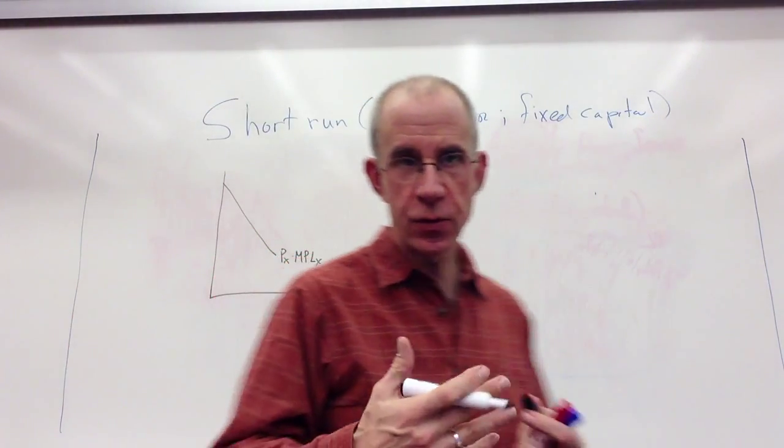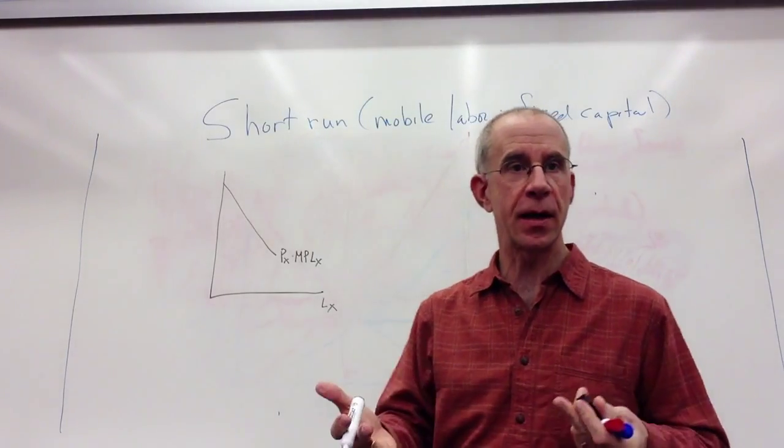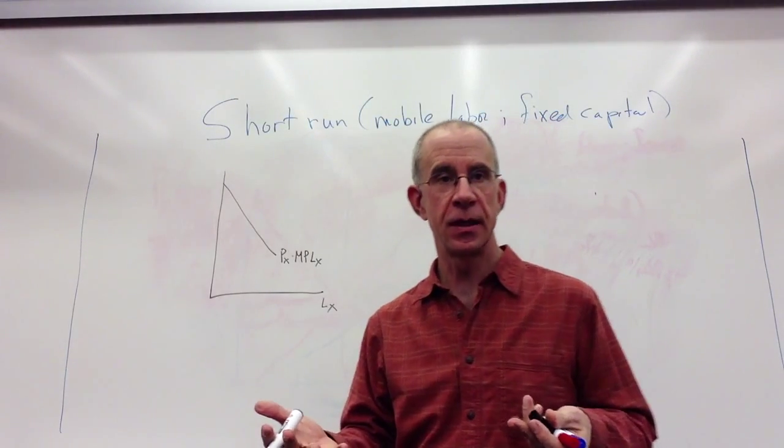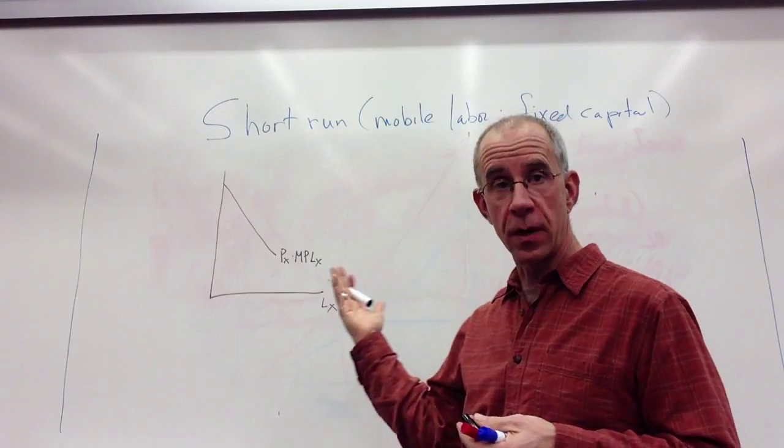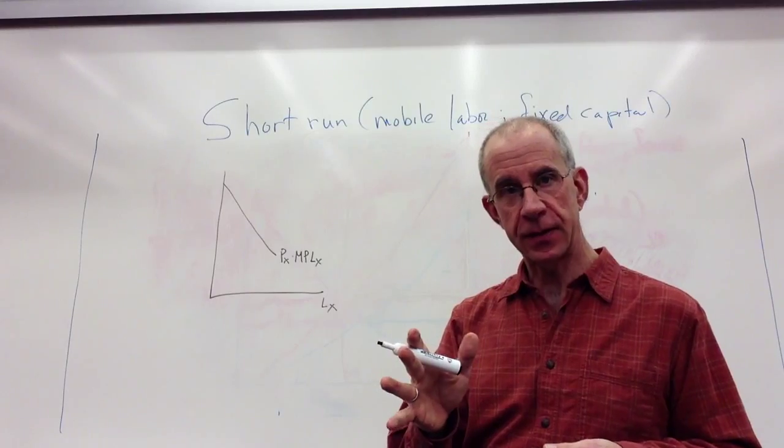So in this video I'd like to introduce the graphical version of labor market equilibrium with two industries when you're looking at the short run where labor can move between industries but capital is fixed.